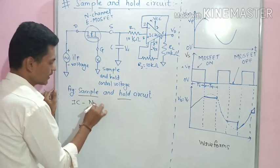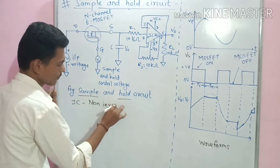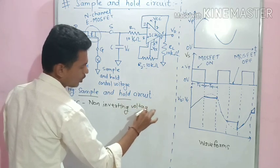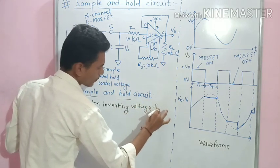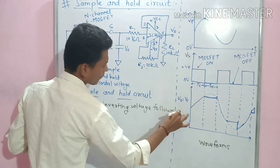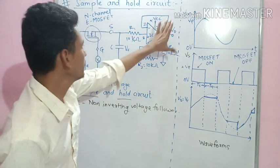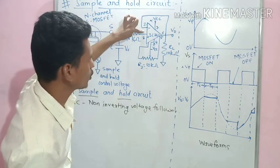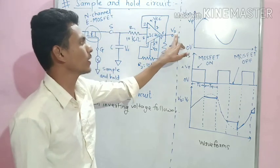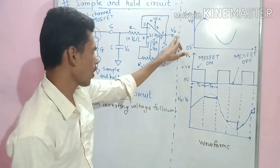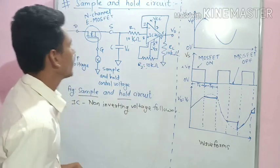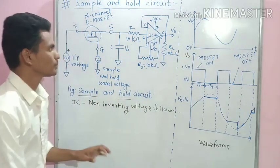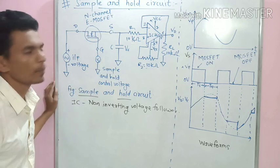This makes it a non-inverting voltage follower. That means whatever voltage is present at the input of the IC, the same voltage is given at the output of the operational amplifier.